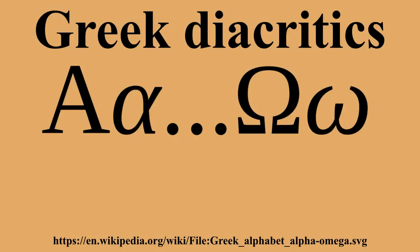Monotonic orthography is the standard system for modern Greek. It retains two diacritics: a single accent, the tonos, which indicates stress, and the dieresis, which usually indicates a hiatus but occasionally indicates a diphthong.